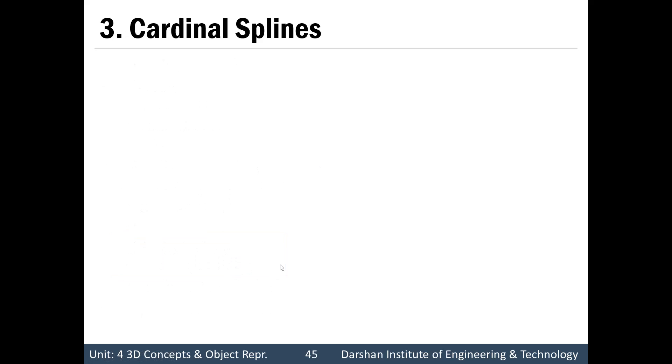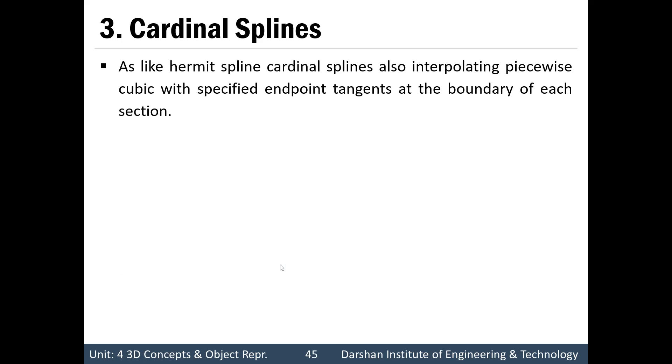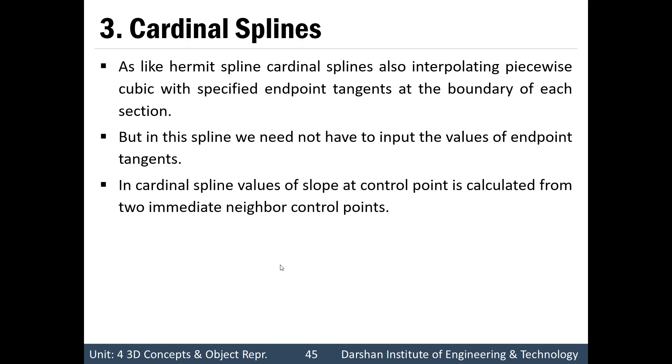First one is cardinal spline. As like Hermit spline, cardinal spline also interpolating piecewise cubic with specified endpoint tangent at boundary of each section. But in this spline, we need not have to input value of endpoint tangent. In Hermit interpolation, we need to input value of dpk and dpk+1 that is first derivative at the endpoint. But in cardinal spline, we need not to give that values.